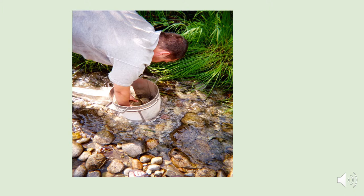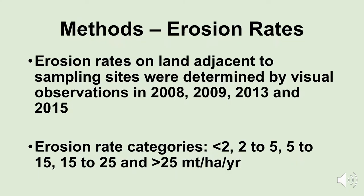So we collected our macroinvertebrates, they went back to the lab to be identified and to come up with an SMI index that would rate the quality of water in that stream spot anywhere from poor to very good. Then we wanted to relate the stream index values to other things we saw on the ground — we wanted to relate it to erosion rates on the land adjacent to the sampling sites. We did this by visual observations.